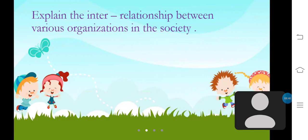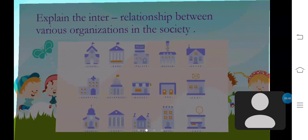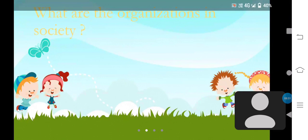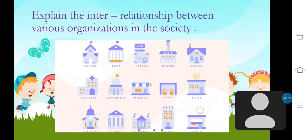Next, let's explain interrelationships between various organisations in society. The government institutions, religious institutions, private institutions, voluntary organisations and other institutions that exist in a society have been established to ensure the wellbeing of people. The activities of those institutions can be actively carried out through building meaningful human ties with these institutions.